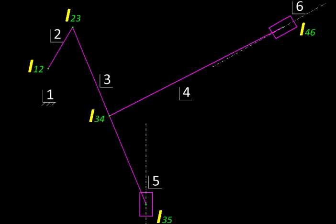Because we have 6 links here we will have 15 instantaneous centers. The formula is the number of links n multiplied by n minus 1 divided by 2. So 6 into 5 divided by 2 is 15.